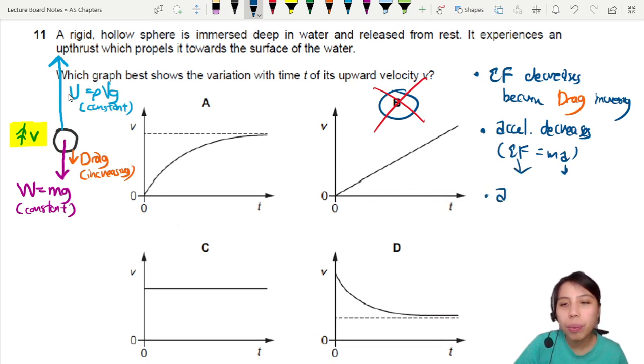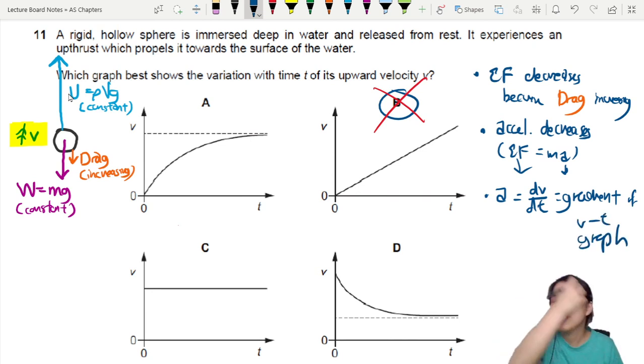So acceleration is, by the way, our gradient. Remember, acceleration is dv dt, which is the gradient of vt graph. So you need to look for which case you have a decreasing gradient. So C is out. A or D?